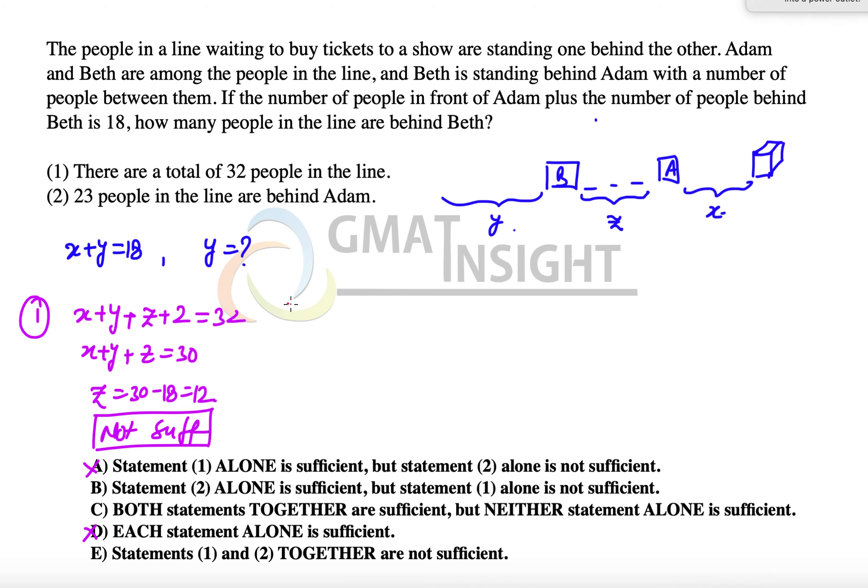Let's check the second statement. The second statement is 23 people in the line are behind Adam. So the number of people behind Adam is equivalent to y plus z plus 1. This one is for B: y plus z plus 1, and this is equal to 23. That means we know y plus z is equal to 22.